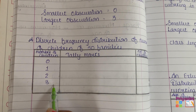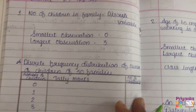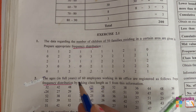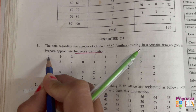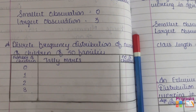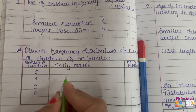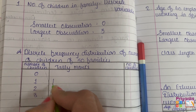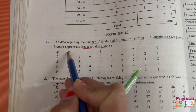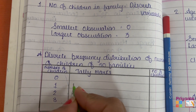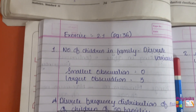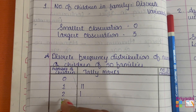Now we will do the tally marking. For tally marking, we take each number from the data one by one and make the corresponding mark in the table. For example, the first number is 1, so we put a tally line in the row for 1. The second number is also 1, so we add one more line. Next is 2, so we place a mark in the row of 2.